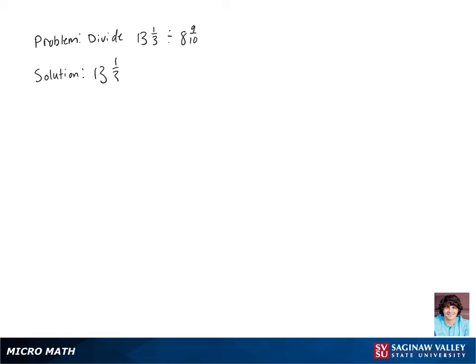Let's divide 13 and 1 third by 8 and 9 tenths. So the first thing we're going to want to do is rewrite our fractions as mixed numbers.